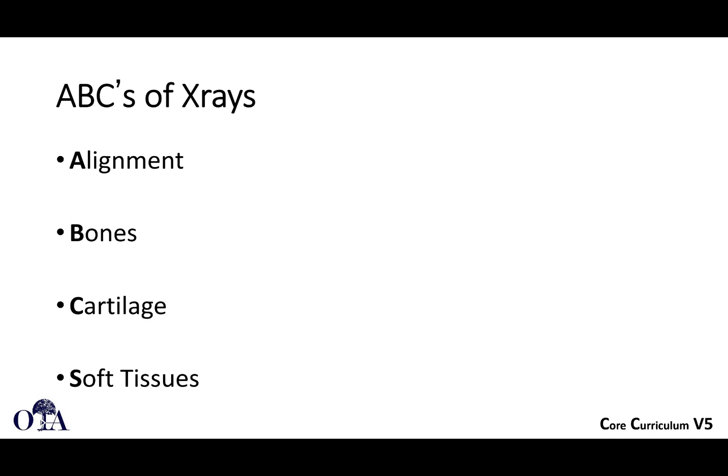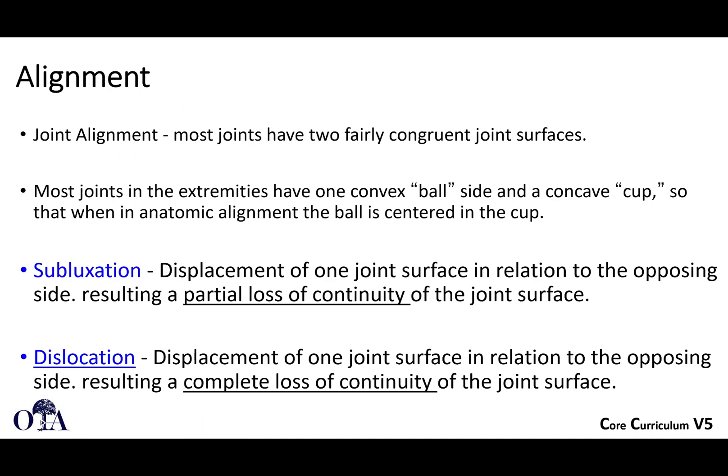We already talked about terminology and fracture patterns. In the last video, we talked a lot about screw design, implant design, plate and screw function — a lot about implants. And now we're going to talk a little bit more about x-rays and then how we put everything together with imaging and fracture fixation. I'm going to talk about alignment, bones, cartilage, soft tissue — the ABCs of x-rays.